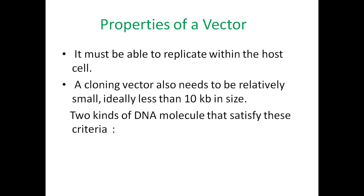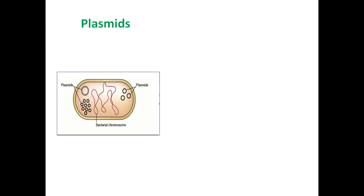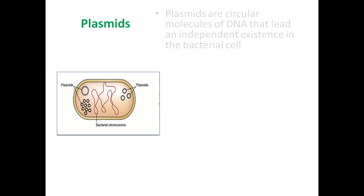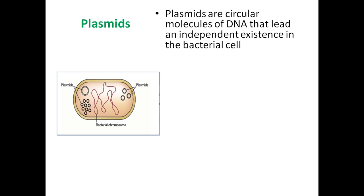Based on the properties discussed, there are two kinds of DNA molecules that can act as vectors: the first is plasmid and the second is bacteriophage. Moving on to plasmids — plasmids are circular molecules of DNA that lead an independent existence in the bacterial cell. These are circular DNA molecules and they are not connected to the bacterial chromosome; they lie independent of the bacterial genetic material.